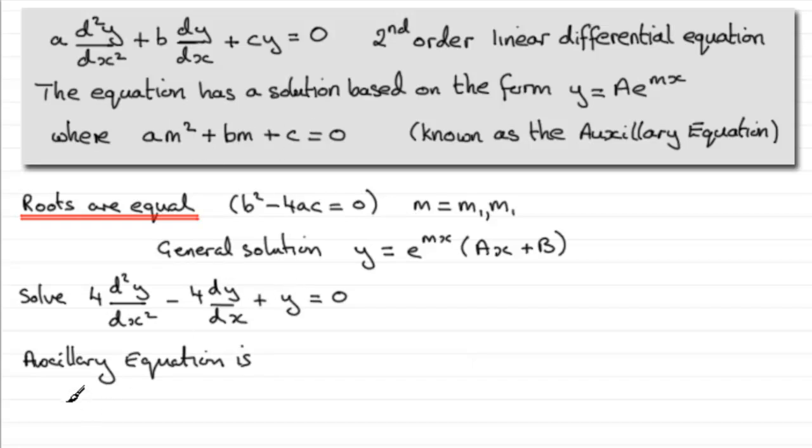we create the equation 4m squared minus 4m plus 1 equals 0, and we solve this. You could check the discriminant b squared minus 4ac; if you did, you'd find it equals 0,